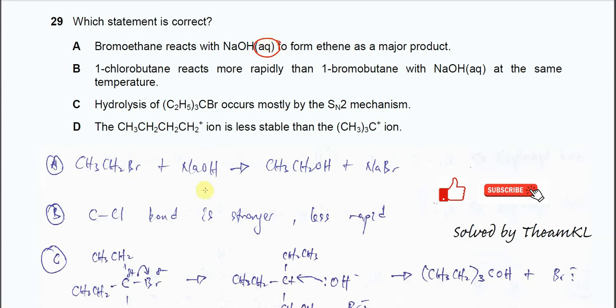The reaction is something like this: Bromoethane reacts with sodium hydroxide to form ethanol and NaBr. This is a substitution reaction, not elimination. Therefore A is incorrect.